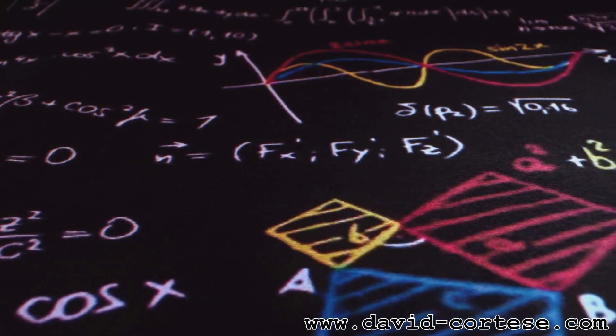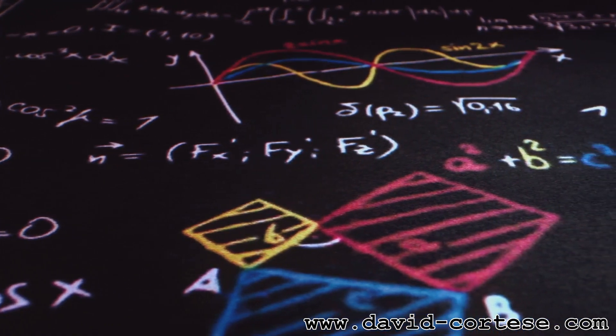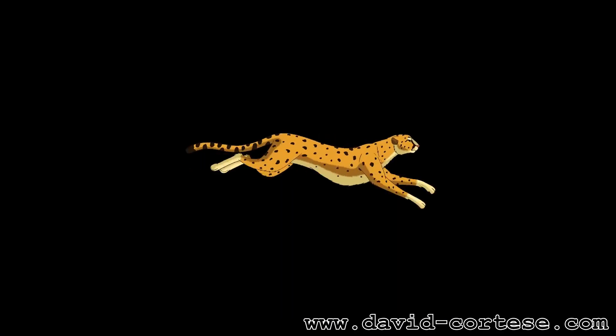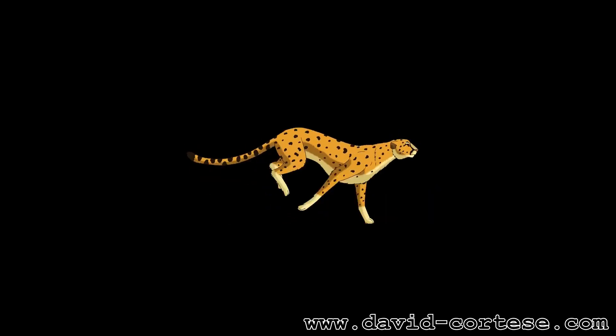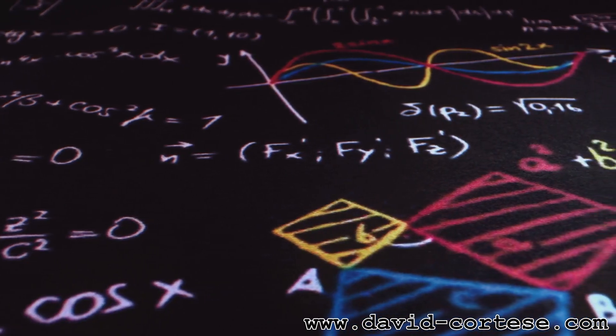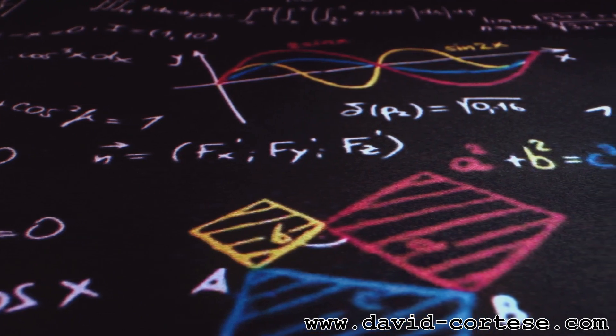By understanding limits, we can analyze what happens as values approach a certain point. Derivatives help us quantify rates of change, like the speed of that cheetah. Integrals allow us to calculate the total effect of change over time or space, like the area of that lake.